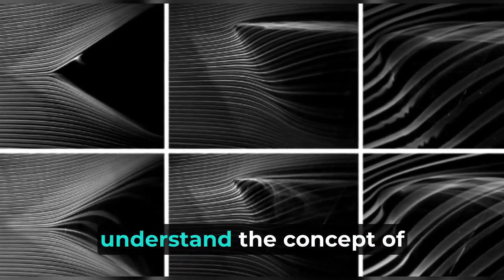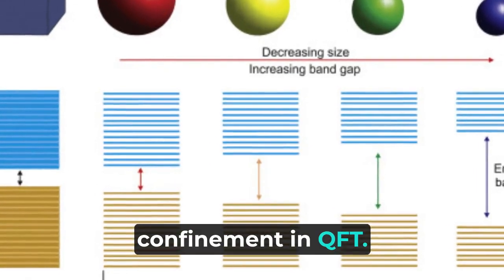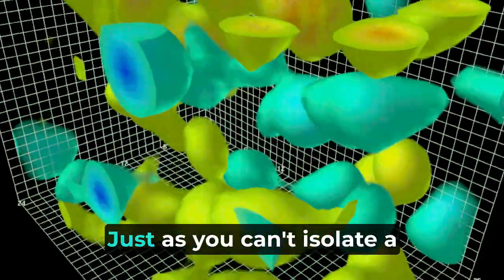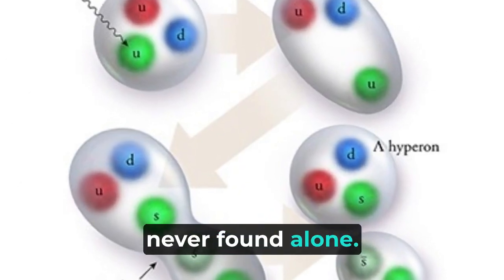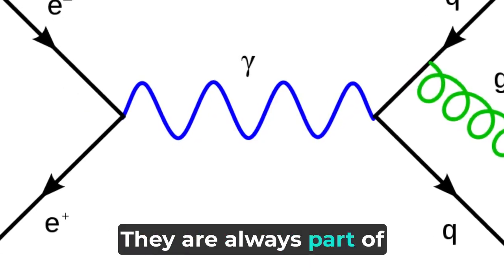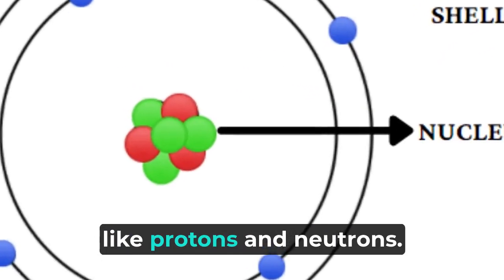This picture also helps us understand the concept of confinement in QFT. Just as you can't isolate a single swirl from the smoke, quarks and gluons are never found alone. They are always part of larger structures, like protons and neutrons.